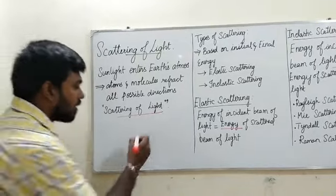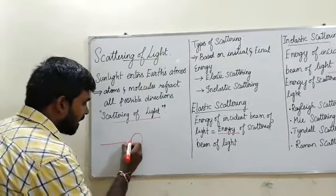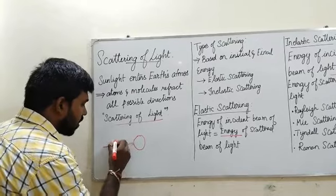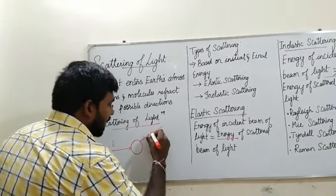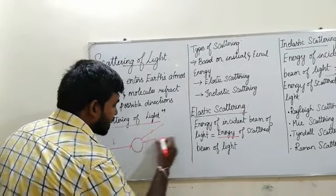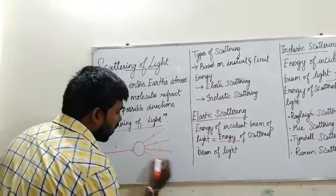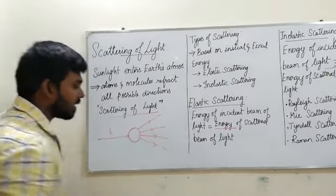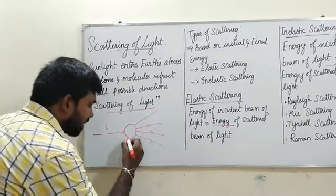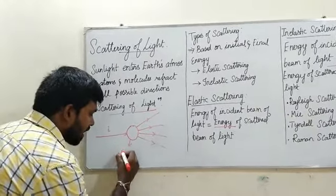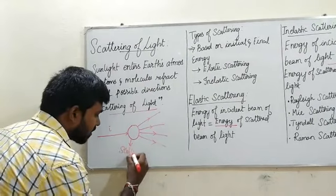Consider a particle. When light is incident on a particle, it gets scattered in all possible directions. The particle is known as a scatterer.